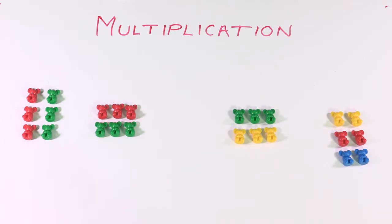Have a look on the board. Tom has two groups of three stars. How many stars would he have all together? So we can see that we have two groups of three. If we add those together, three, four, five, six.